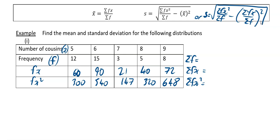When you fill in your summation rows: sigma f — the sum of all your f's — is 43. The sum of your fx row is 283. The sum of your fx squared row is 1955. Do not be surprised if the fx squared sum in particular is a very large number — sometimes it can be 5 or 6 digits — and then we're ready to fill in.